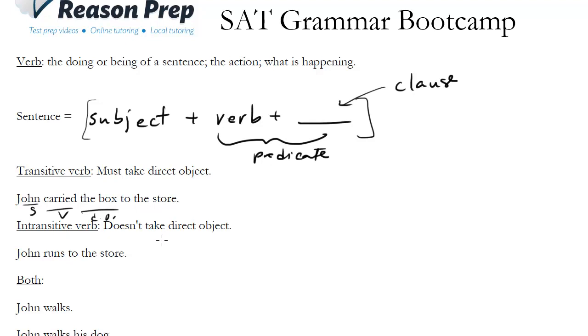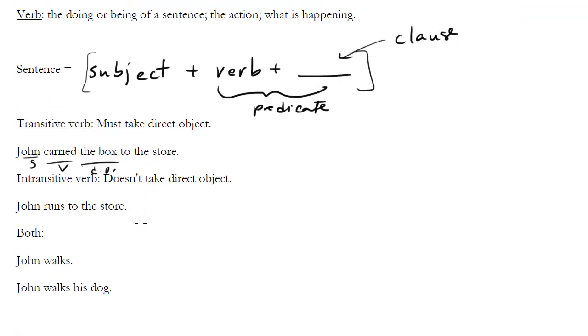Other verbs known as intransitives don't take a direct object, they don't need one. So for instance, John runs to the store, you can even just make this John runs, right? That's fine, you don't have to actually run anything.